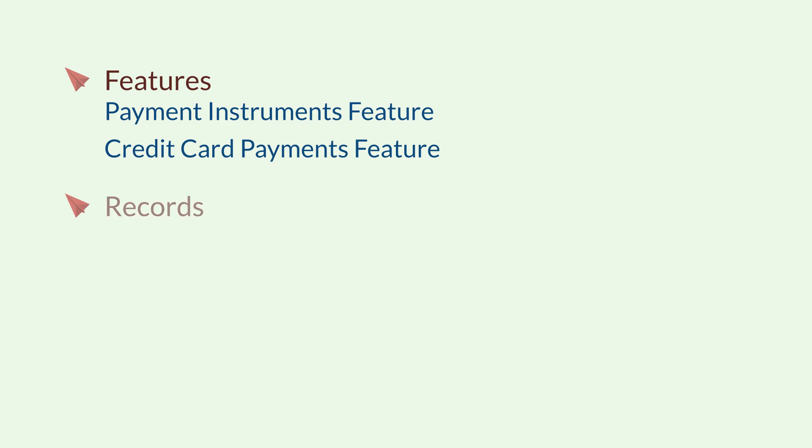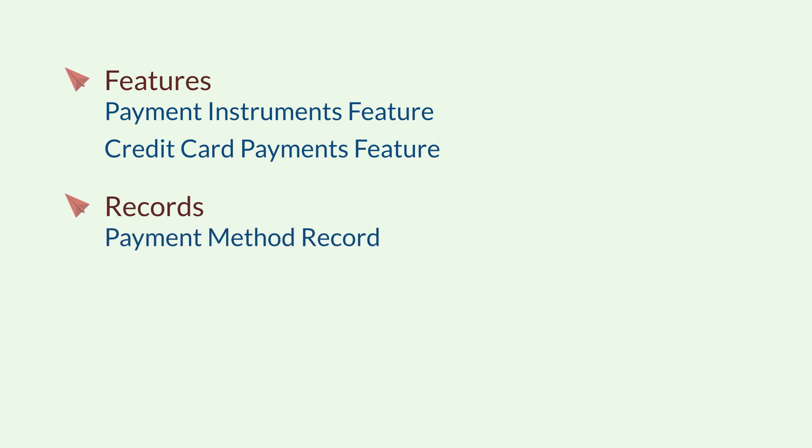Along with the features you need to enable, you'll also need to create at least one payment method record, which you can do at Setup > Accounting > Setup Tasks > Accounting Lists > New. You will also need payment processing profiles, which you can create at Setup > Accounting > Payment Processing Profiles > New.